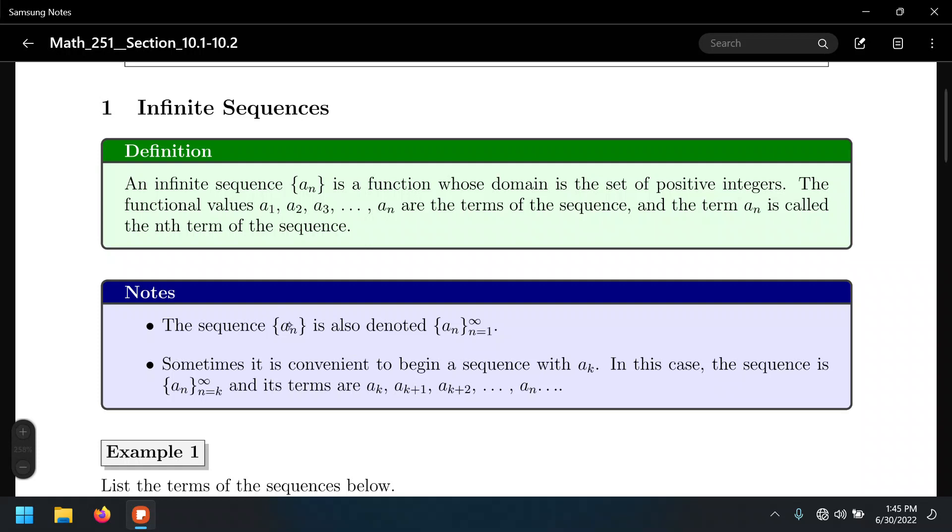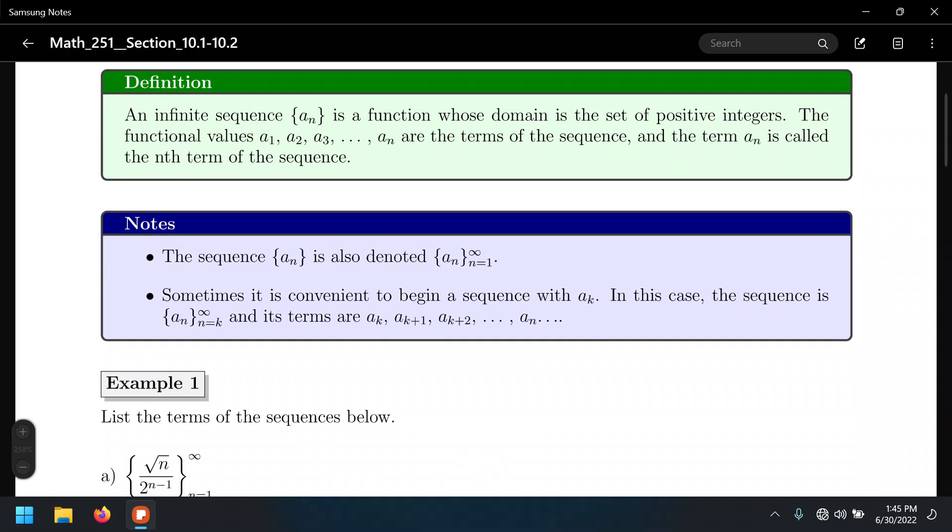The notation: typically we have these curly braces with some algebraic rule right here. Sometimes we have the lower limit, the term that we are supposed to start with, typically the first one. Sometimes we can start with n equals 2, n equals 3, depending on how the sequence is defined. It goes all the way to infinity. That's why we're talking about infinite sequences.